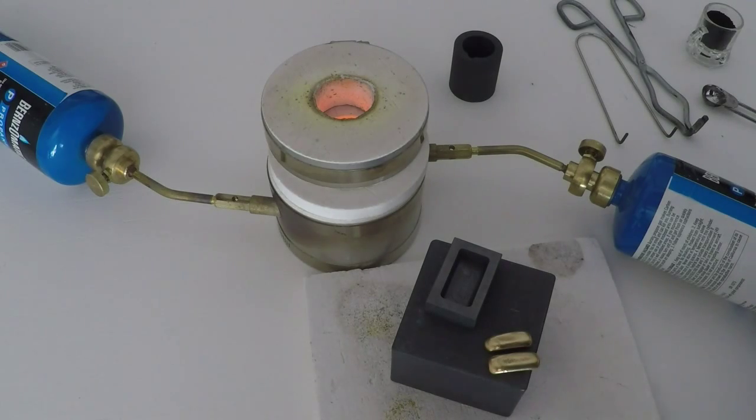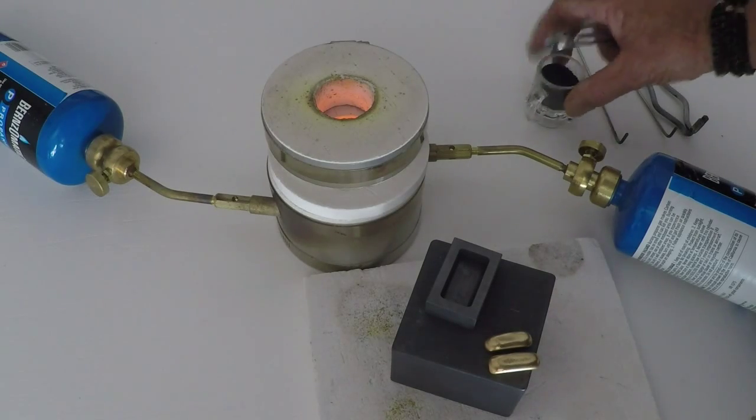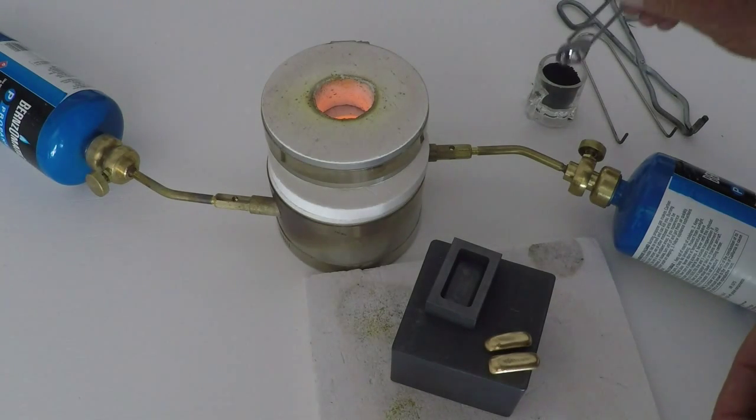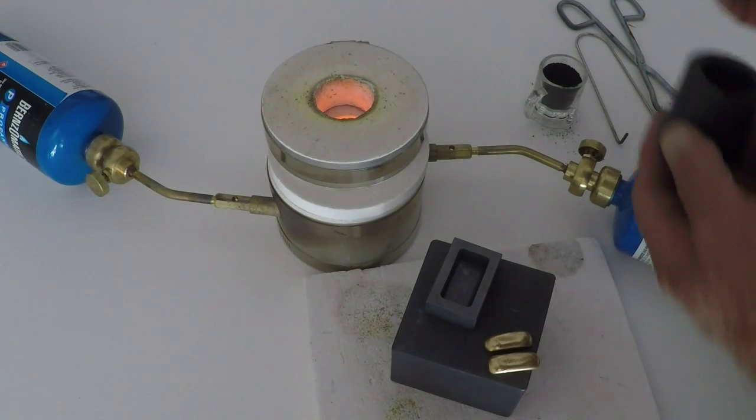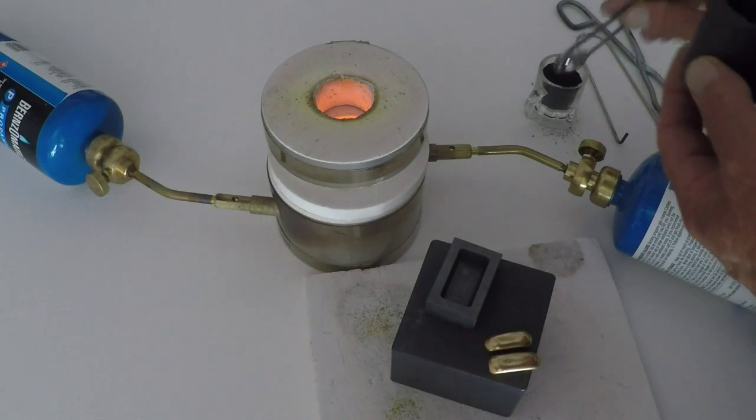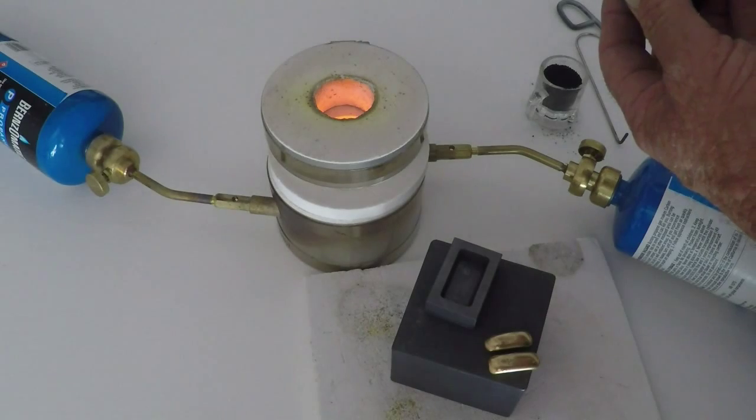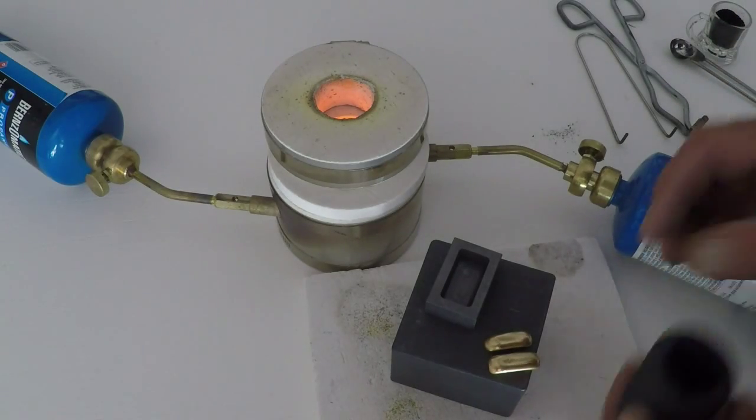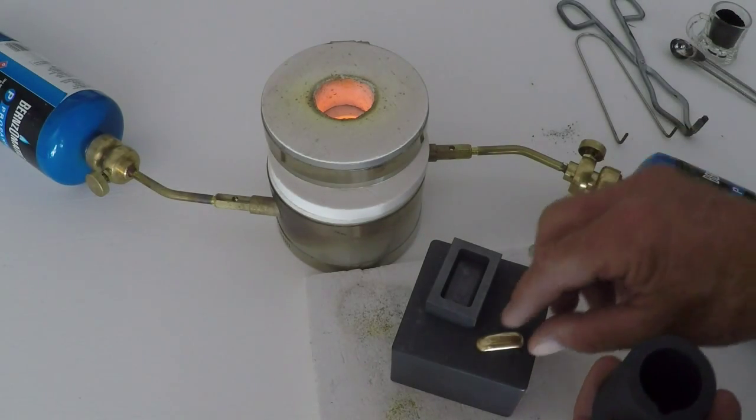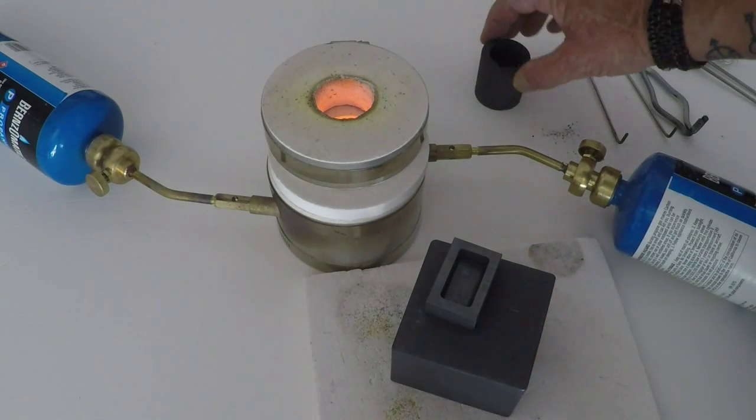In our crucible here, we're going to put about three quarters of a teaspoon of black flux. This is a little half teaspoon measure here, so we'll dump about three quarters of the flux in there, and then we're going to put our little ingots inside the crucible.